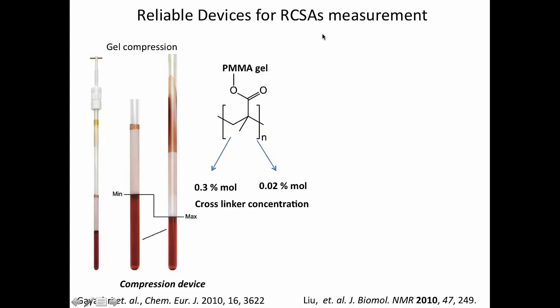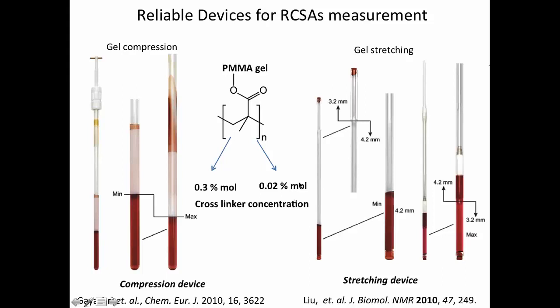Coming back to the devices, we have two reliable devices to do RCSA measurement. One is the compression device. And you go from minimum to maximum. And then you take two measurements, two carbon NMR. In this case, you have to use the gels with 0.3% molar concentration of cross-linker. But in the other case, in the case of the stretching device, normally the concentration of the cross-linker has to be smaller. So in the wider part of the device, the gel has to swell in order to touch the wall. And then you press it and you stretch it. And these are the two methods right now available.